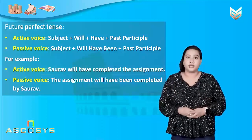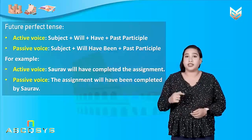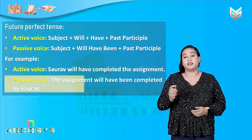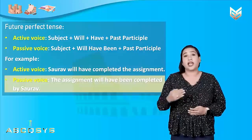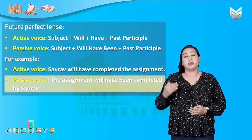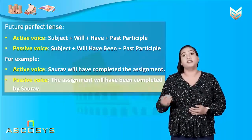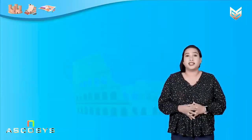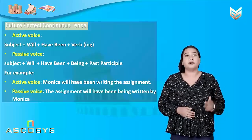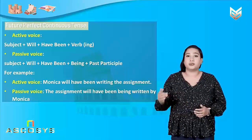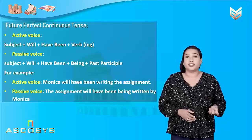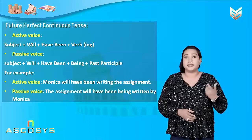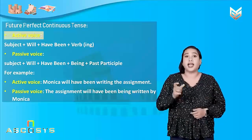Now let us take an example. 'Sorrow will have completed the assignment' — this sentence is in the active voice. The same sentence in the passive voice will become: 'The assignment will have been completed by Sorrow.' Lastly, let us have a look at future perfect continuous tense.